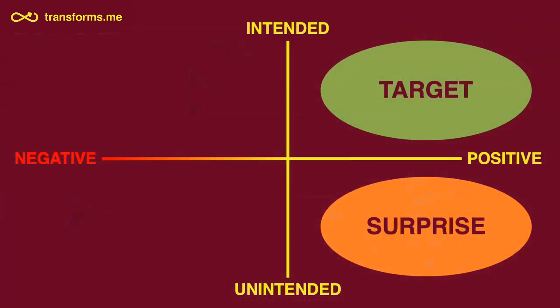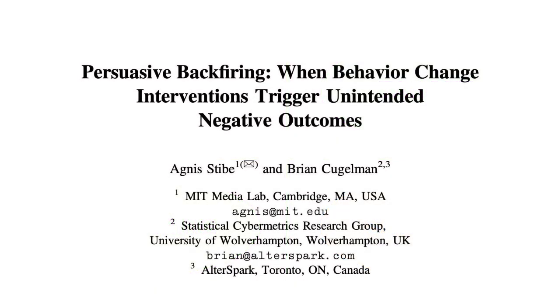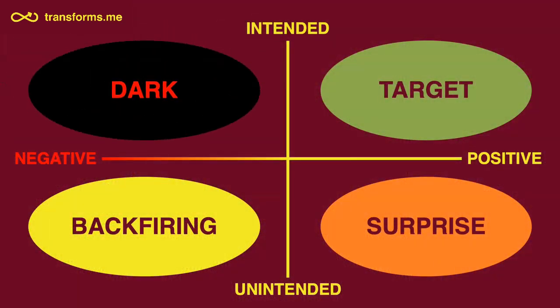On the negative side of the metrics, we also have two quadrants. Starting with negative outcomes for the user that are unintended — we call these backfires. That was the essence of a previously published paper together with Brian Krugelman, where we proposed a taxonomy of persuasive backfiring. That taxonomy helps people predict and avoid unintended negative human behaviors in technology and game design. The last quadrant is dark patterns, and that is exactly what we are now addressing in our research.